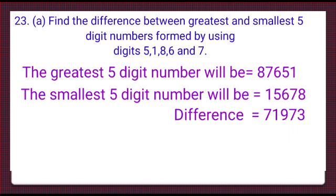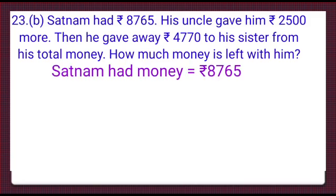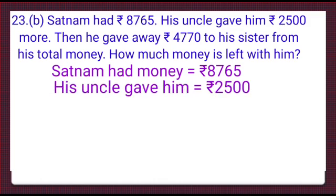Now, here is the B part of 23rd question. Satnam had Rs. 8,765. His uncle gave him Rs. 2500 more. Then he gave away Rs. 4770 to his sister from his total money. How much money is left with him? Let us solve this question, kids. Satnam had money is equal to Rs. 8,765. His uncle gave him Rs. 2500.